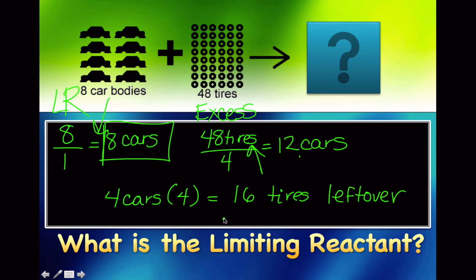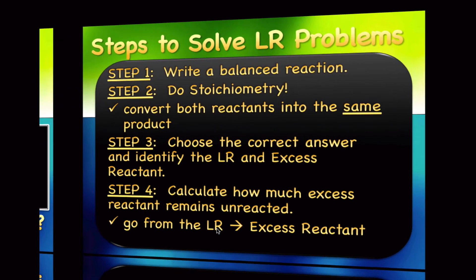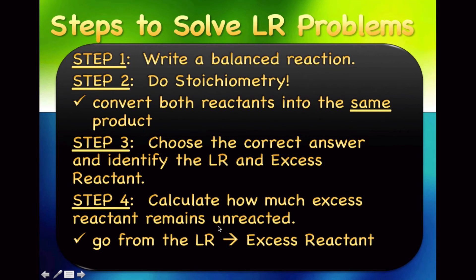We're going to do the same type of thing but with chemicals. Here are the steps for solving limiting reactant problems. Step one: always have a balanced chemical reaction, just like any stoichiometry problem. Step two: do the stoichiometry — take both reactants they give you and convert them into the same product, because we can't compare answers otherwise.